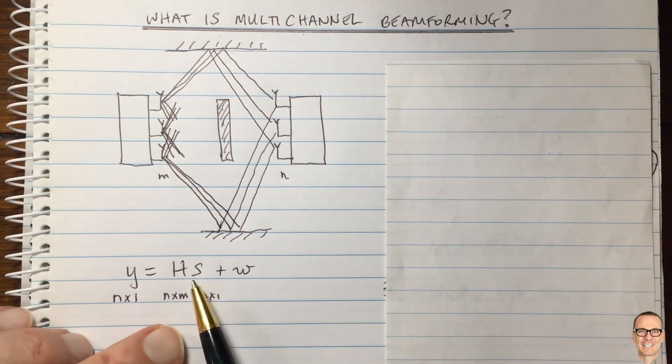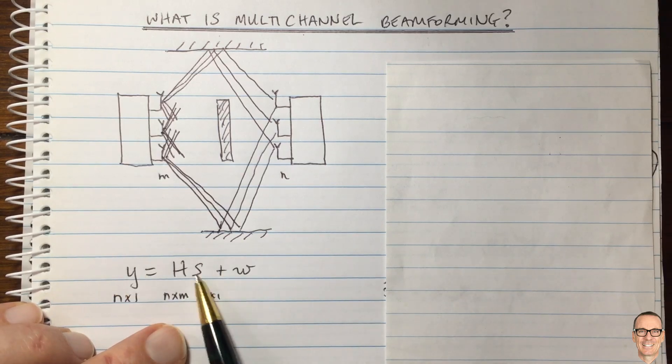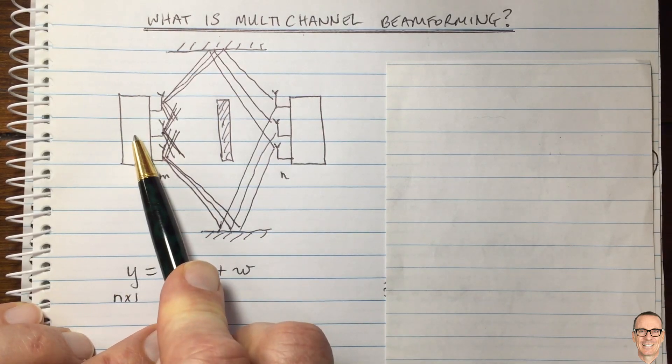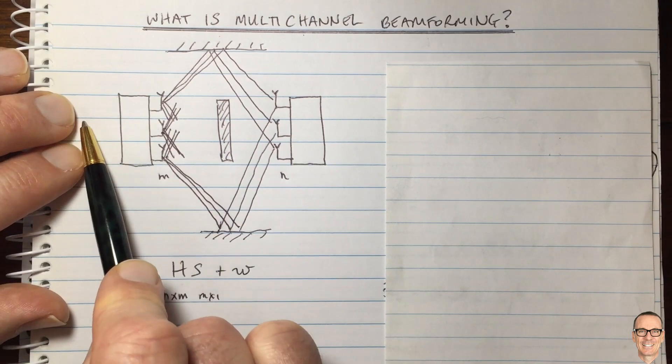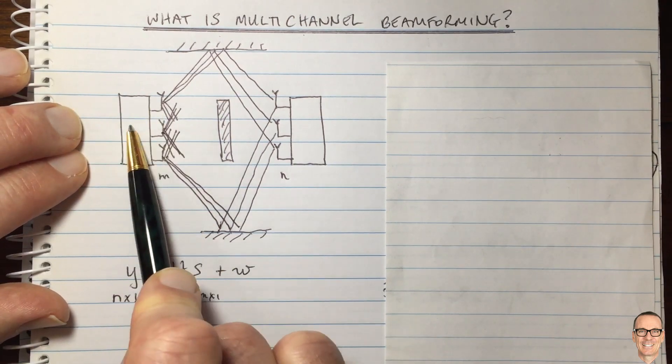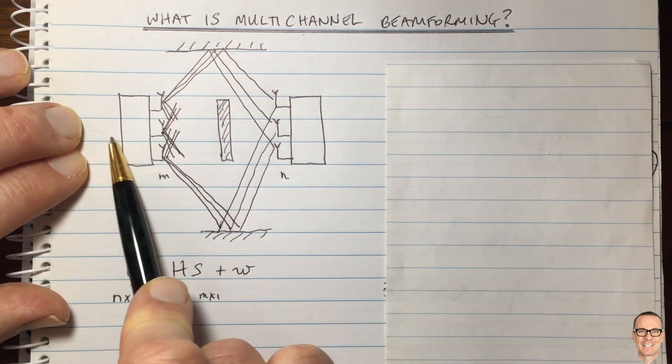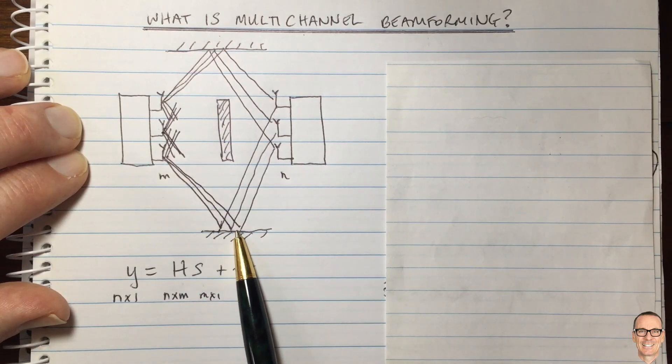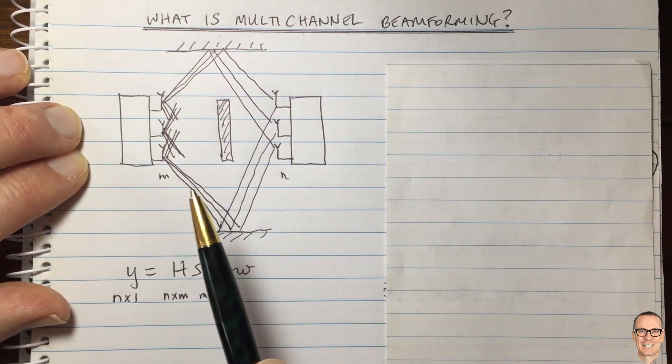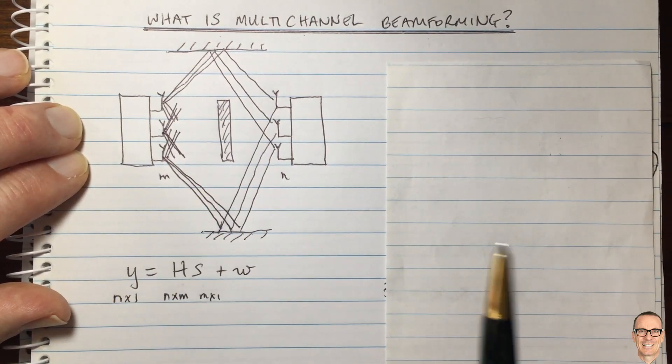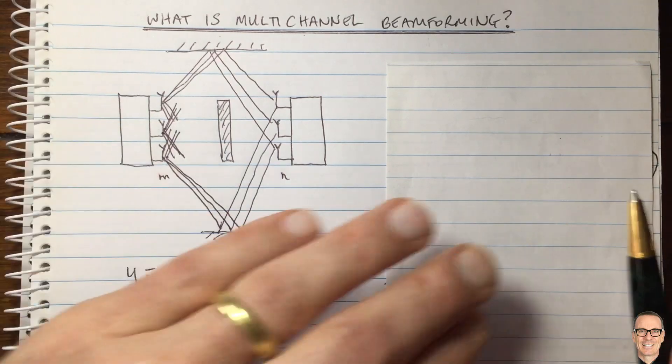We do that by doing some pre-processing at the transmitter. So we can put different data. We could send one data stream in that direction and a different data stream in this direction. And of course, if there's more than two directions, we can do even more than that. And how do we do that pre-processing?